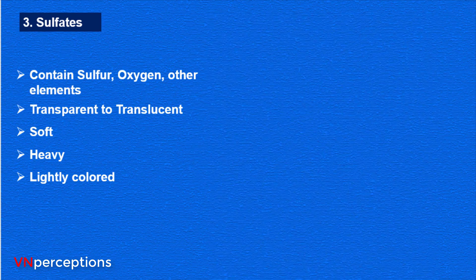Then it is sulphates. Sulphates contain sulphur, oxygen and other elements. These are transparent to translucent, and they are soft, heavy and light colored.